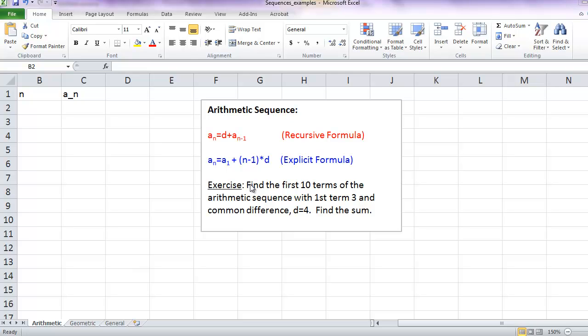The exercise is to find the first 10 terms of the arithmetic sequence with first term 3 and common difference 4. We'll also find the sum. In these first two columns, I've labeled n and a sub n. The n refers to the index.